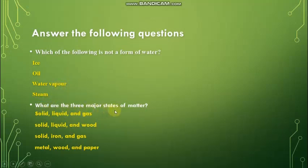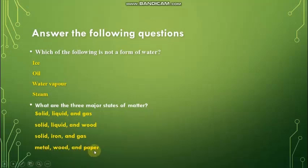What are the three major states of matter? The options are: solid, liquid, and gas; solid, liquid, and wood; solid, iron, and gas; or metal, wood, and paper. Solid, liquid, and gas are the three forms of matter, so the first option is the correct answer.